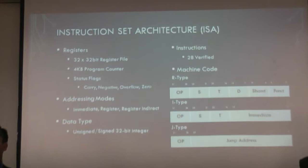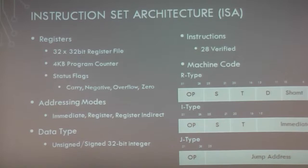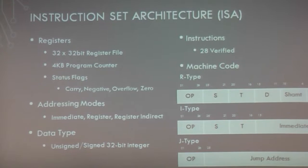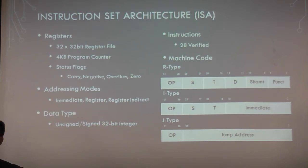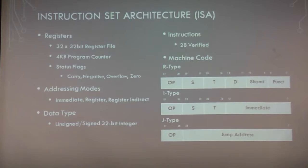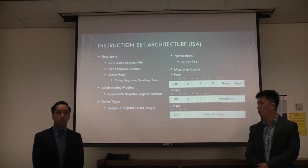In our ISA, we implemented a 32x32-bit register file, a four-kilobyte program counter, and status flag registers including carry, negative, zero, and overflow. We also implemented three different addressing modes — immediate, register, and register indirect — two data types of unsigned and signed 32-bit integers, and verified 28 different instructions including a variety of R-types, I-types, and J-types.